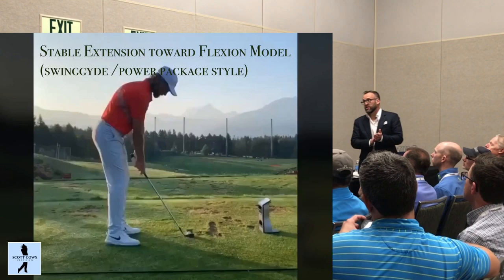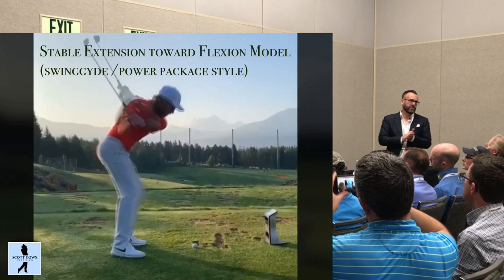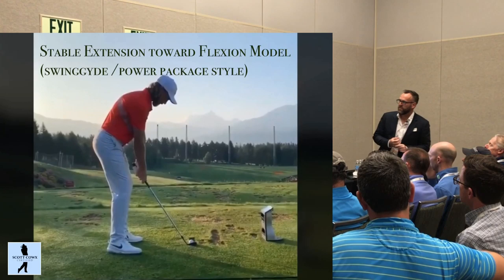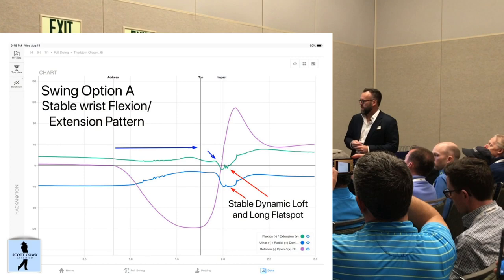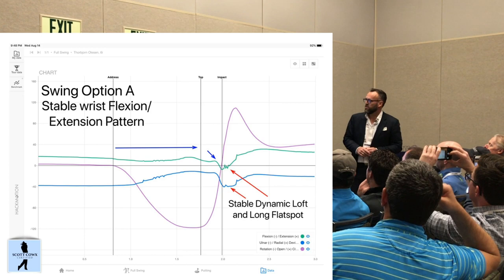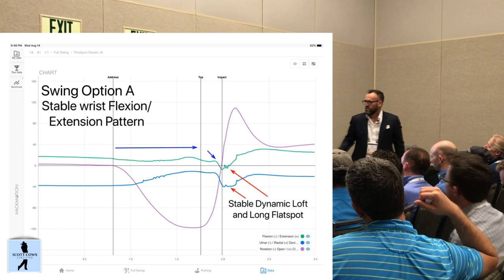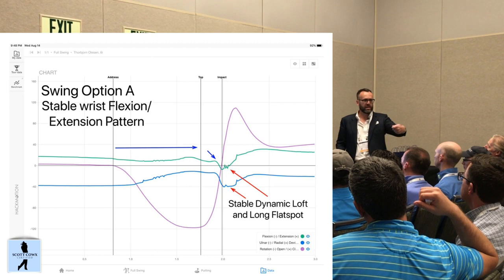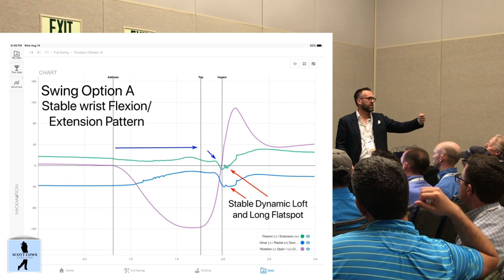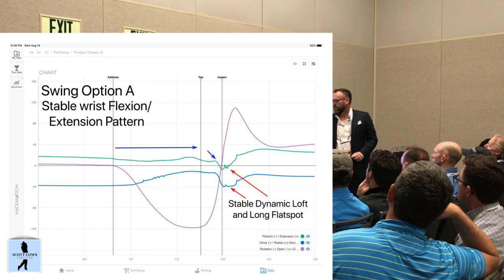First, we have what I call the stable extension-toward-flexion model, or the swing guide / power package style. Players like Tommy Fleetwood fit this. This is Thorbjorn Olsen's graph — a very similar pattern. Green is flexion-extension, blue is radial-ulnar deviation, purple is global rotation. In this pattern the player keeps the amount of extension somewhat constant from address to the top of the swing, then gets a little bit of flexion into the golf ball halfway down — the old-school turn-down release.